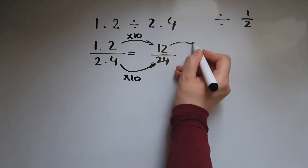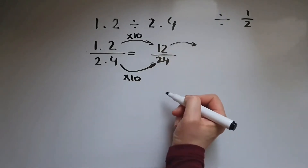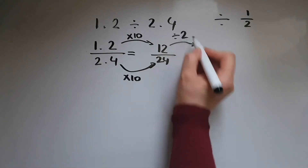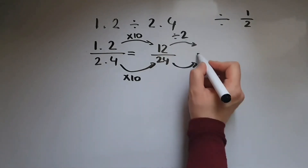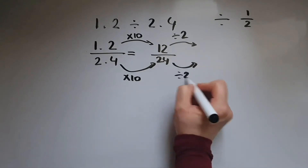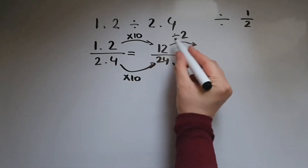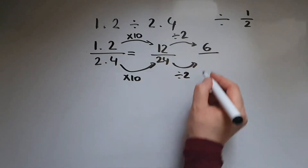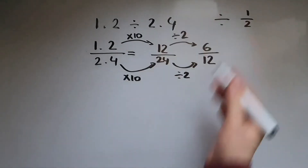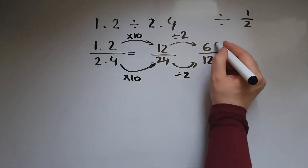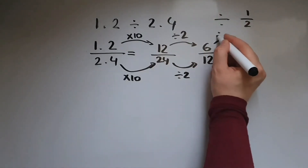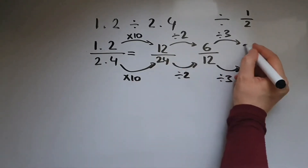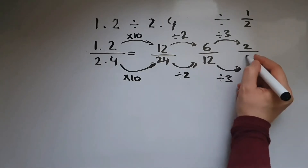I could divide both numbers by 2 to keep the fraction the same. So 12 divided by 2 gives us 6, and 24 divided by 2 gives us 12. I can still divide this by 3, so that gives us 2 over 4.